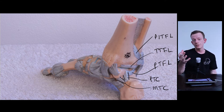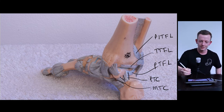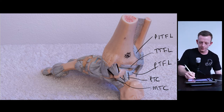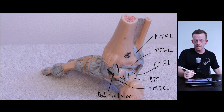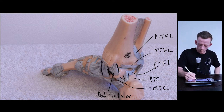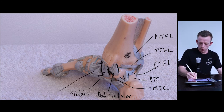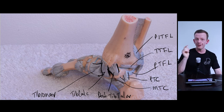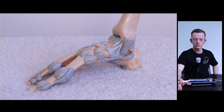Now we get to the deltoid ligament, which is the major stabilizing ligament on the medial side of the ankle. Deltoid is easy, but the difficult part is knowing the individual components. The first part between the tibia and the talus is the posterior tibiotalar ligament. Just anterior to it is the tibiocalcaneal ligament, and then we have the tibionavicular ligament — which is quite large. Those are three of the four parts of the deltoid ligament.